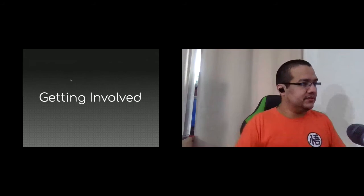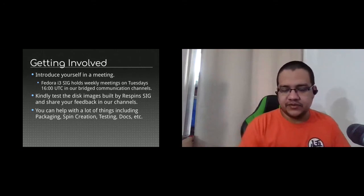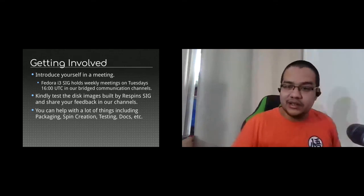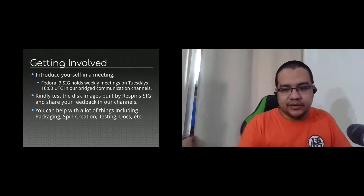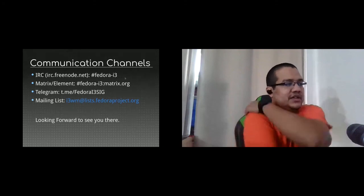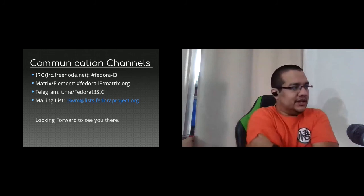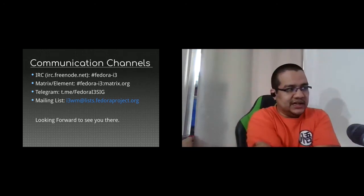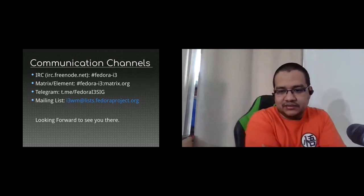To get involved, you can join a meeting, get into IRC in #fedora-i3, or join the Matrix room — the link was shared in the chat. You can test the image we built, and you can help with packaging, testing, or documenting. You just need to get into a meeting or into a room and chat with us. Our communication channels are: IRC at #fedora-i3, Matrix at matrix.org, Telegram at @fedoraI3, or our mailing list at i3wm@lists.fedoraproject.org. Just write to us and start working with us.